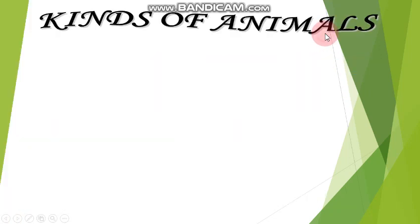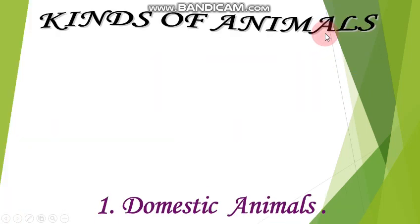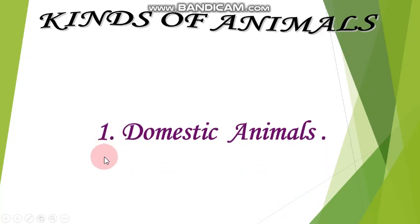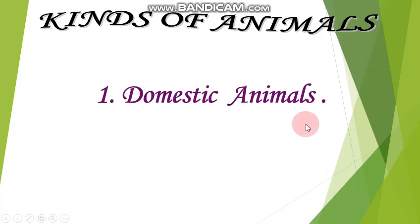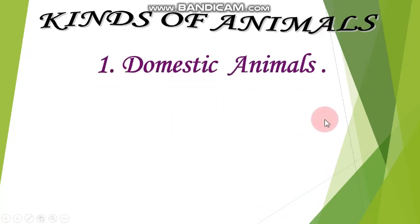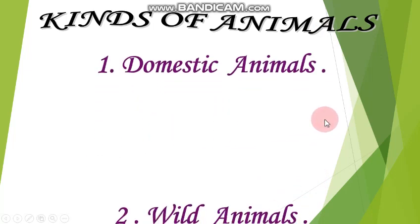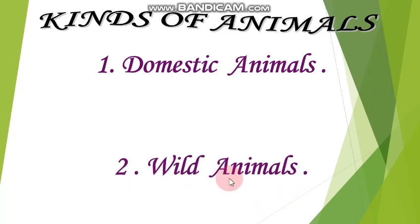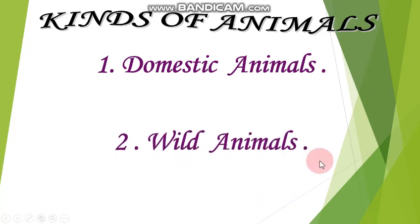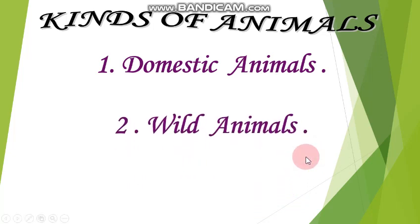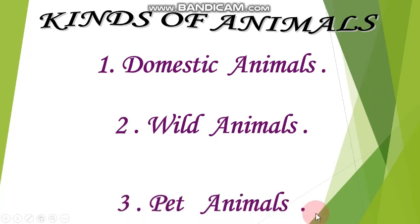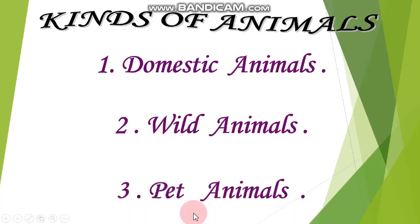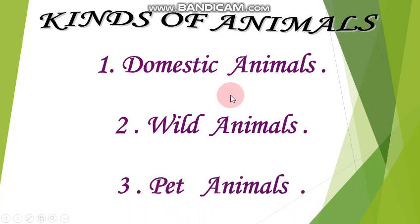There are three kinds of animals. First, domestic animals. Second, wild animals. And third, pet animals.